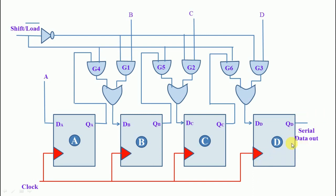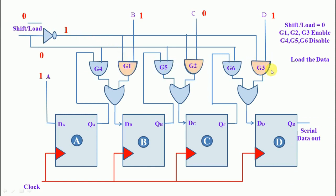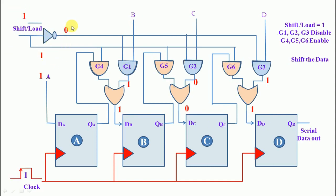The fourth flip-flop output is the serial data output. Now we load the data: our chosen data is 1 1 0 1. We apply the control signal = 0; the NOT gate output becomes 1, which enables G1, G2, and G3. This causes all the inputs to be loaded into the flip-flops via the OR gates. With control signal = 0, the data 1 1 0 1 is loaded into the input of each flip-flop.